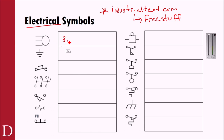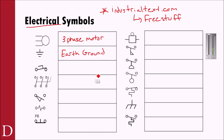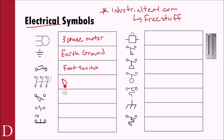This symbol here is a three-phase motor — good one to know. This is an earth ground, meaning something connected into the earth — typically a safety circuit. The symbol represents the ground rod at the side of the building with a metal stake driven into it; all grounds in the building attach back to that stake. This is a foot switch. This is a disconnect — think lockout/tagout — a way to remove power from the system and lock it out. When you flip the handle, all three phases close.